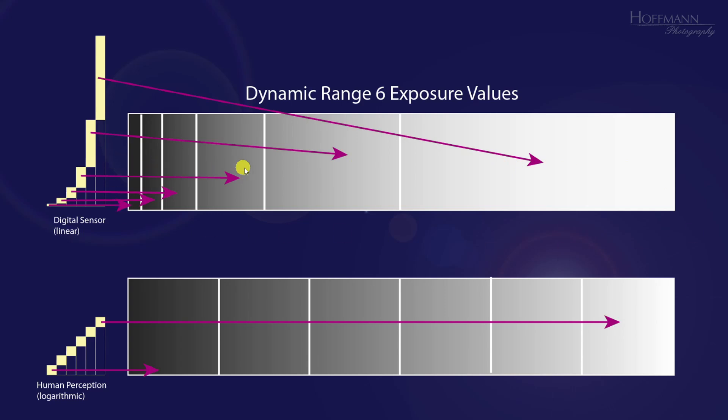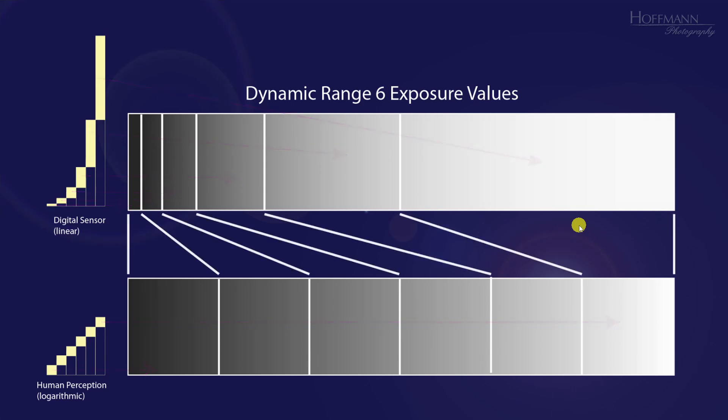If this is the distribution of the brightness values in a digital photograph, then it's immediately clear that this distribution doesn't correspond to the brightness values our brain expects. The photo would be way too dark, and the contrast would be too high. Therefore, we need to expand the dark brightness ranges, and we need to compress the bright brightness ranges.